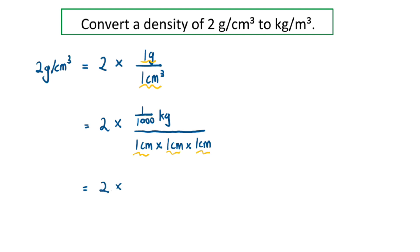So first, for the numerator, the 1/1000 kg is equivalent to 0.001 kg. Then next, for the denominator, to convert each of the 1 cm to 1 meter, we just need to divide by 100.